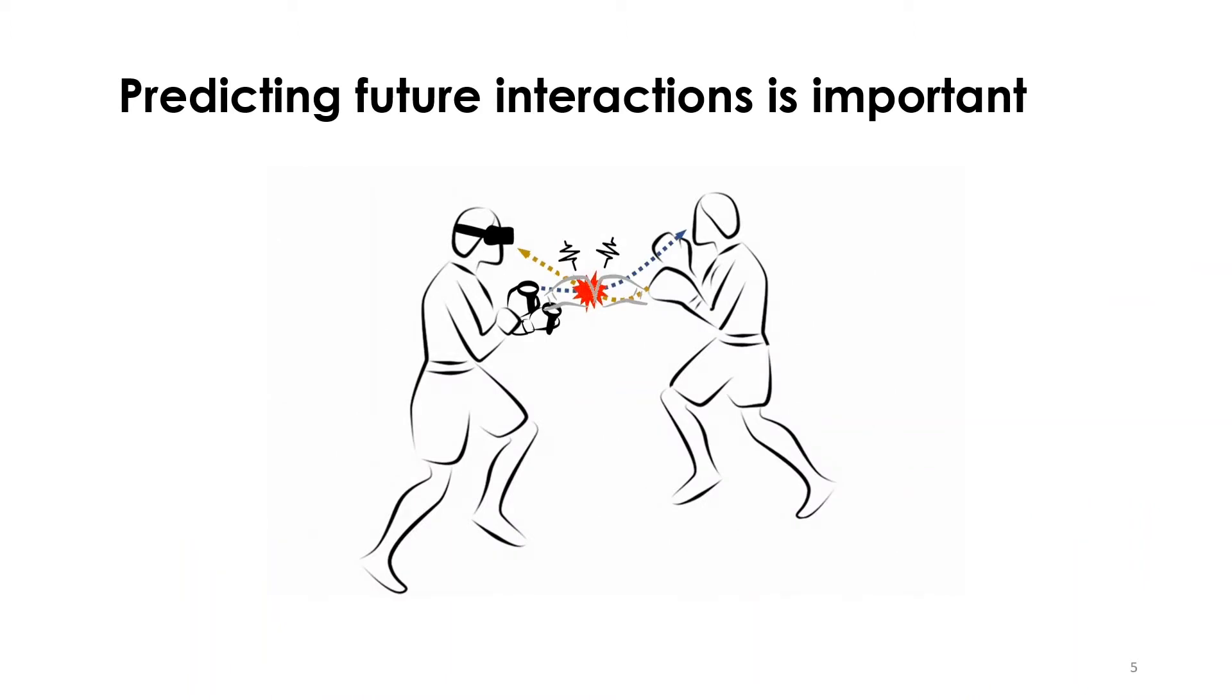For example, consider a VR user playing boxing with a virtual character. The collision between the two boxes is not at the end point but along the trajectory of the movement. By anticipating the trajectory, these events can be predicted and it enables novel applications such as pre-rendering graphics and pre-emptive haptics.